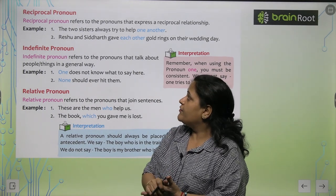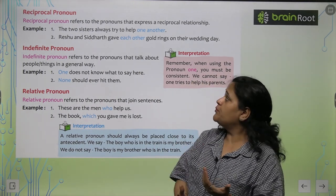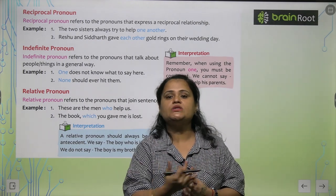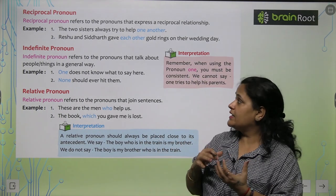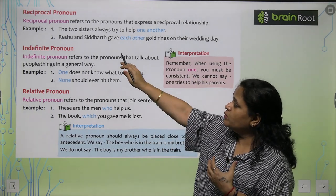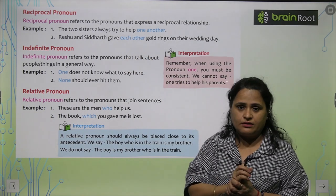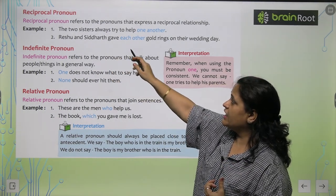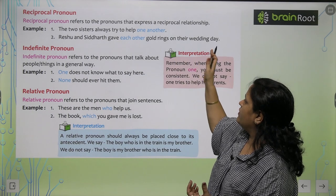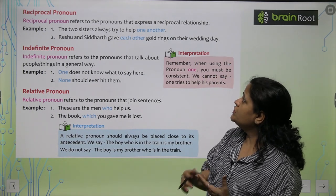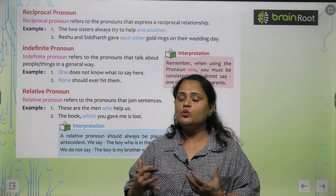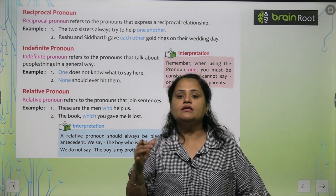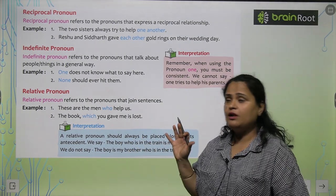Now, reciprocal pronoun. Reciprocal pronoun refers to the pronoun that expresses a reciprocal relationship — ek doosre ke saath. For example: 'The two sisters always try to help one another.' 'Reishu and Siddharth gave each other gold rings on their wedding day.' So when we show a reciprocal relationship, we use reciprocal pronouns like 'one another' and 'each other.'